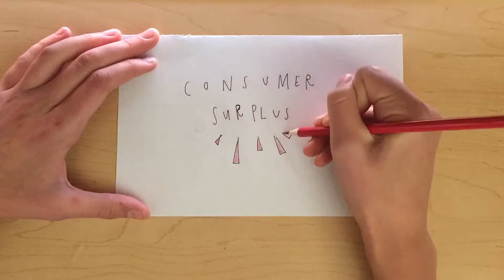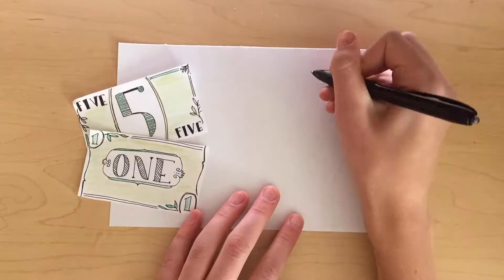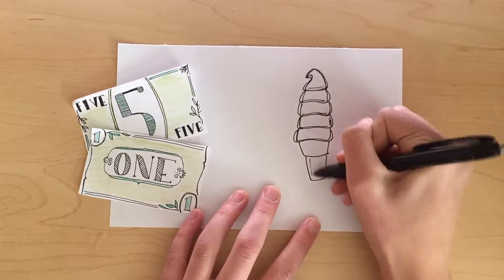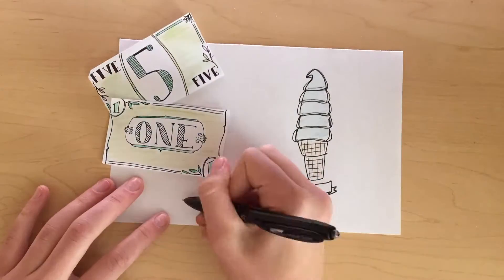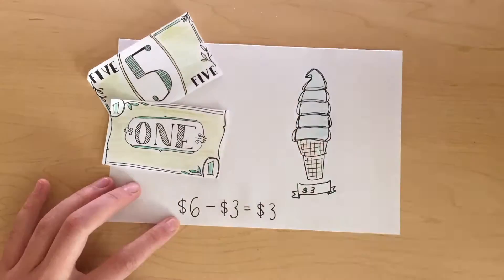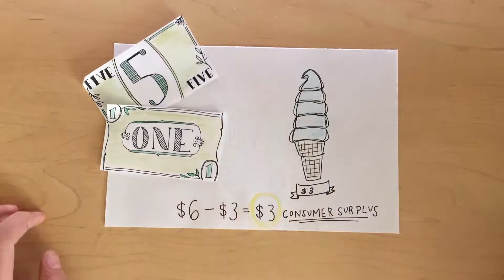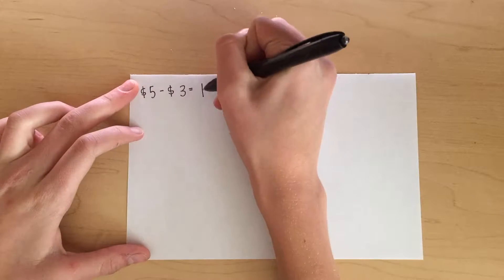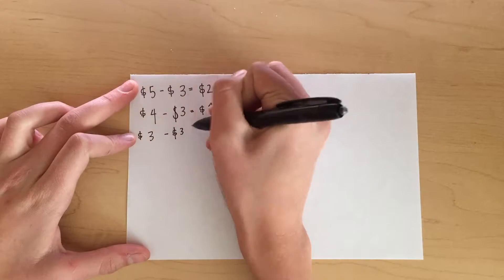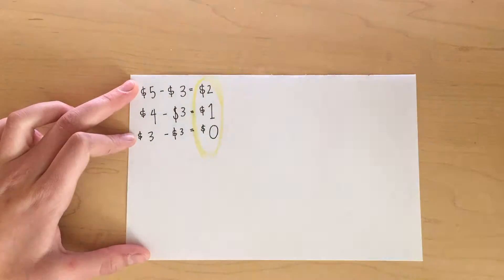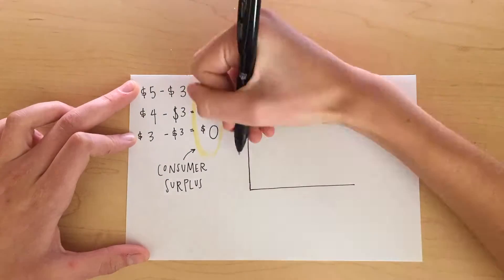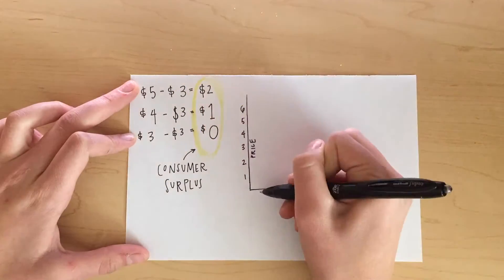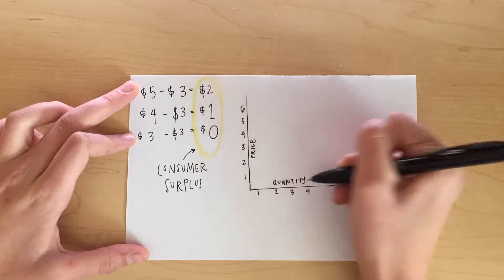Now let's talk about consumer surplus, which is the difference between what I'm willing to pay for something and what I actually have to pay. Let's say the ice cream cone actually cost only $3, but I was originally willing to pay $6. So we take what I was willing to pay minus the actual cost and get my consumer surplus. You can see that the amount I was willing to pay decreased and so my consumer surplus decreased to zero. When consumer surplus is zero, it means I have no preference between eating an ice cream cone or not. And when my consumer surplus is positive, it means I will continue to buy the product.